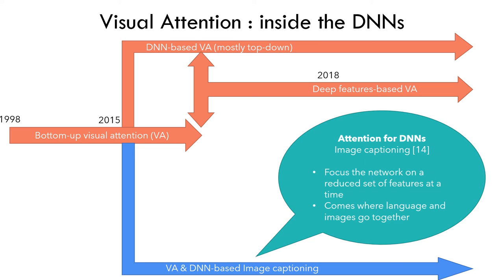All this new work led to a new branch in the attention tree: DNN-based image captioning. The color is different because people who work in this community are actually quite different from people working in the saliency community — they don't really know or exchange with each other, which is probably a bad thing. The idea of attention within DNNs is that we should focus the network on a reduced set of features at a time to be more efficient, and it comes from language processing. Image captioning is both language processing and image processing, so they work well together.